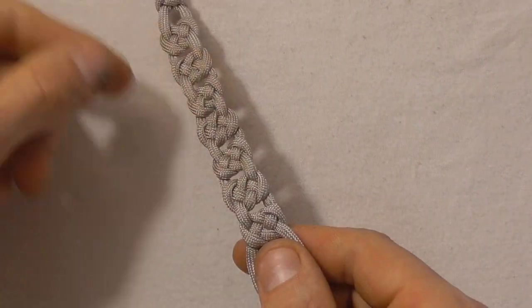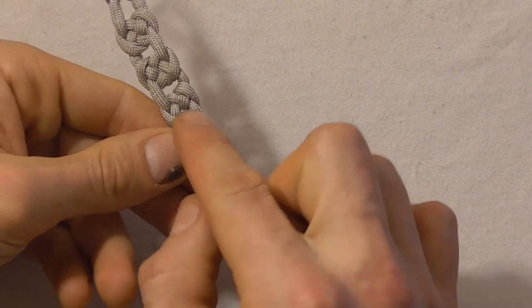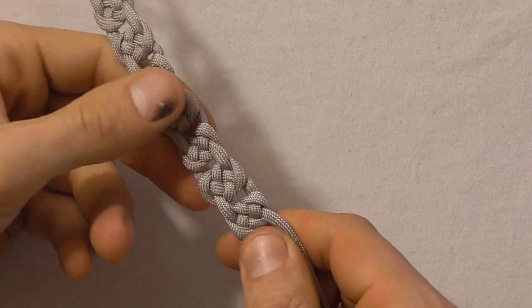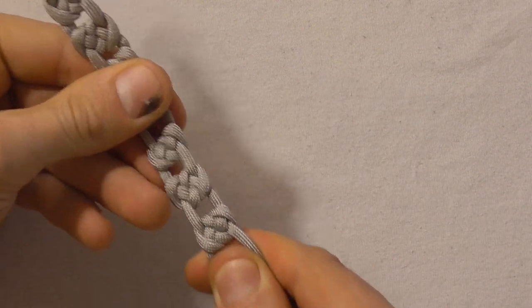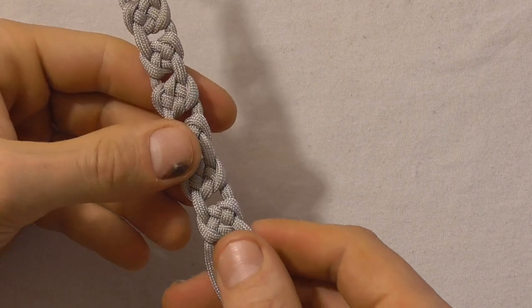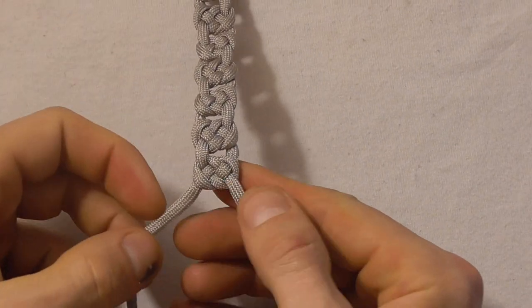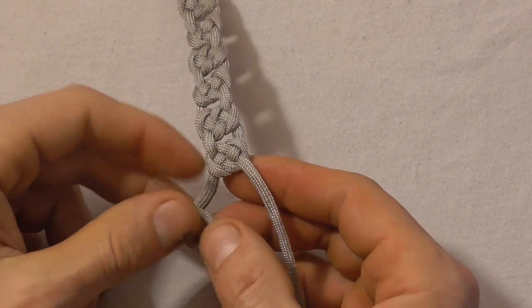So once we have the bracelet as long as we want, making sure that each of these knots is nice and tight and just giving the whole bracelet a pull after we've tied each one, then we just want to finish this whole piece off by tying a diamond knot.